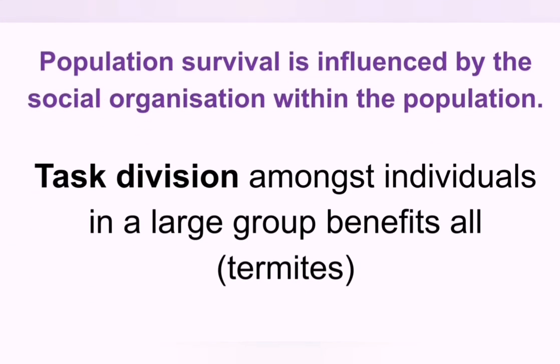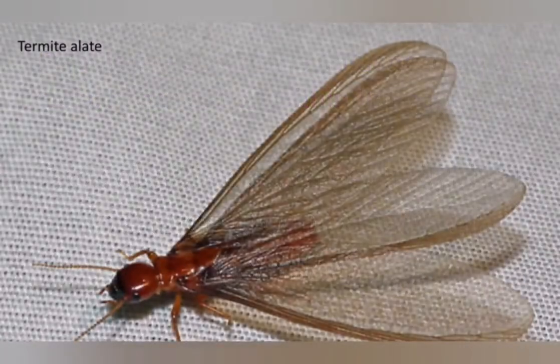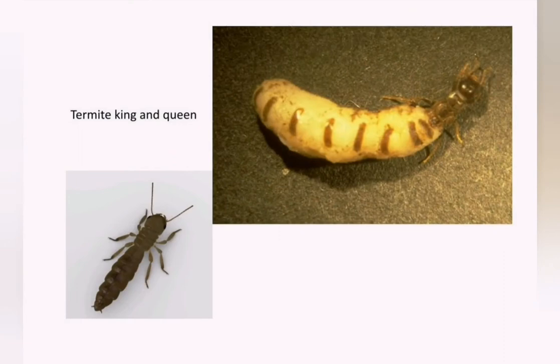In ants, termites, and bees, we see task division among different individuals within the colony — and that is the third type of social organization. You may have seen termite alates flying after rainfall. Here we see a termite king and queen.